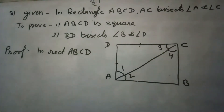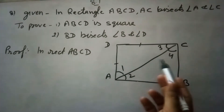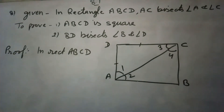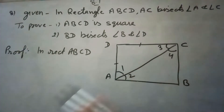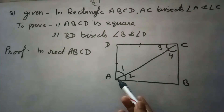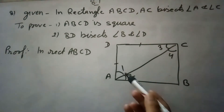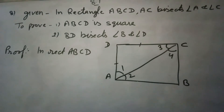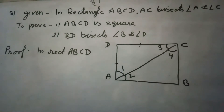So for this, because AC bisects angle A and angle C, and angle A and angle C are equal because this is a rectangle — opposite angles of a parallelogram are equal, and here both are 90 degrees. So we can say that angle 1 equals angle 3, and the sides opposite equal angles are equal, so AD equals CD.